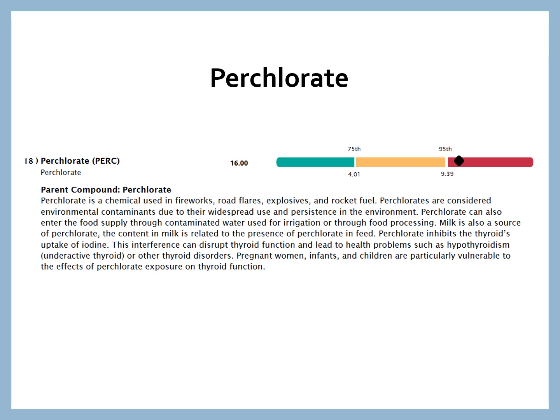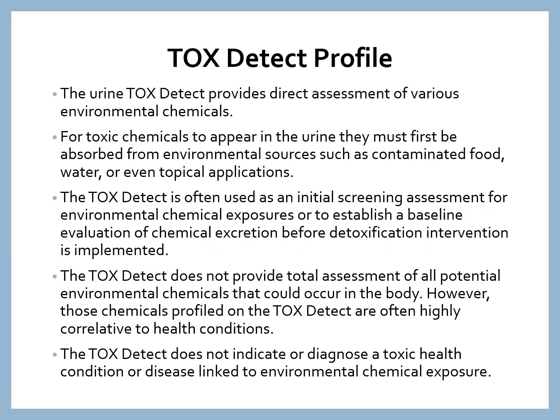A lot of different chemicals are picked up on the ToxDetect profile — these are just a few examples. The urine ToxDetect assessment looks at a variety of environmental chemicals. In order for these to show up in our urine, they have to be absorbed into our body. That could occur from contaminated water or food, or even topical applications where we're absorbing compounds through the skin. The ToxDetect is often used as an initial screening assessment for environmental chemical exposures, or to establish a baseline evaluation before detoxification interventions are implemented.